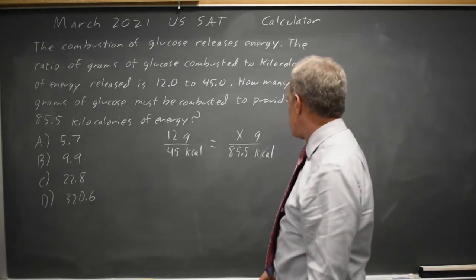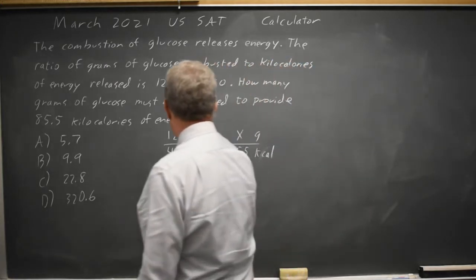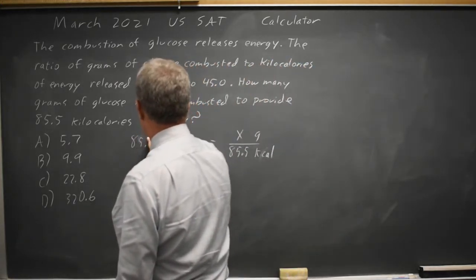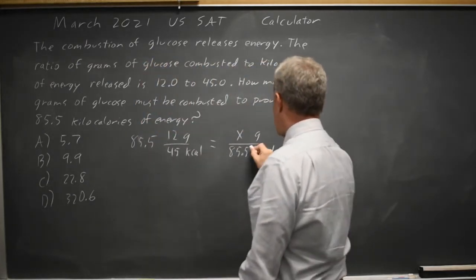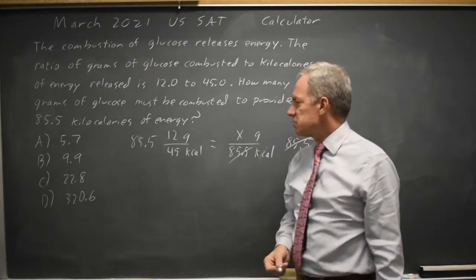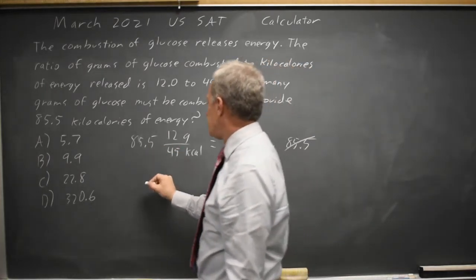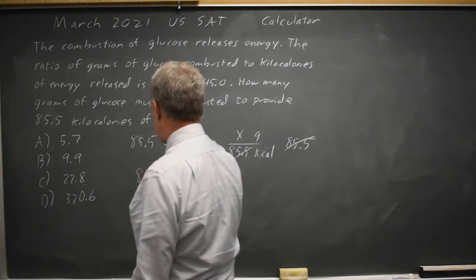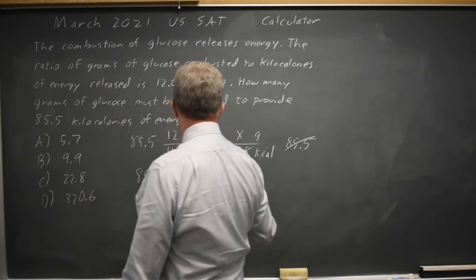Solving for the number of grams, I can multiply both sides by 85.5. The 85.5s cancel and I'm left with 12 over 45 times 85.5 equals X, the number of grams.